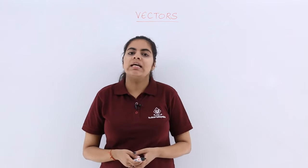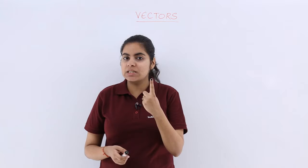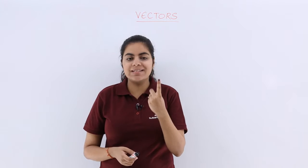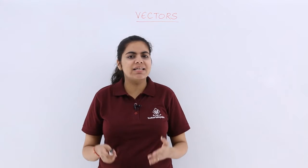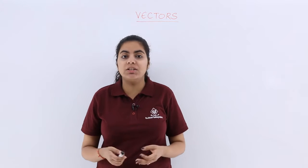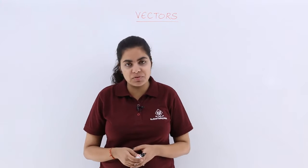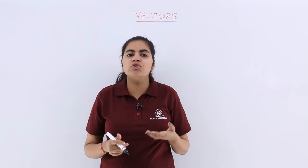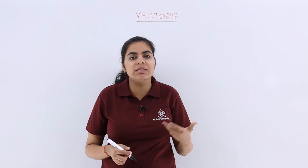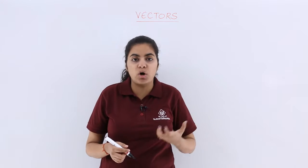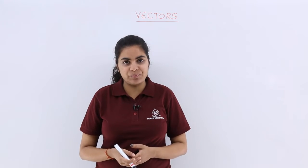Physical quantities can be categorized into two categories: the first being scalars, the second being vectors. Now, what are scalars and what are vectors — this is not a new term to you. You have studied these in physics as well. So for those students who might not have opted for physics, that means they might be from commerce with mathematics, they especially have to pay more attention.